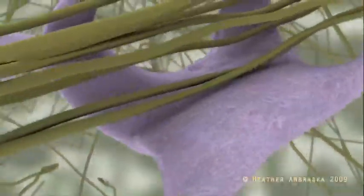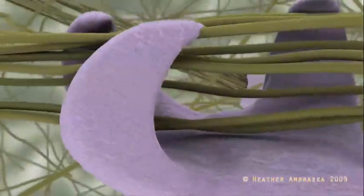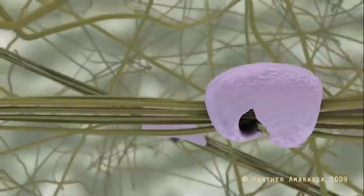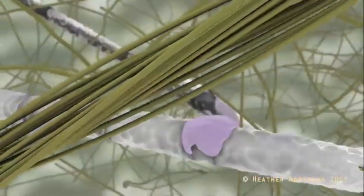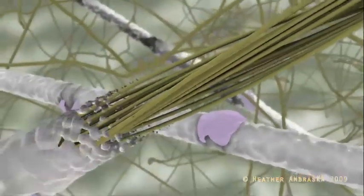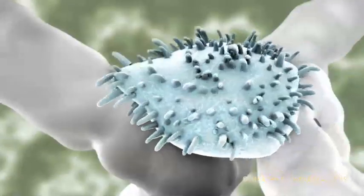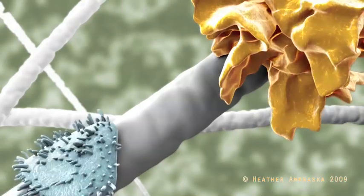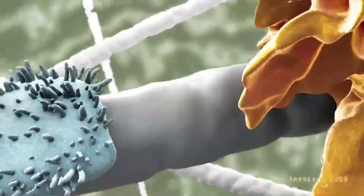During development, collagen fibers become encased by fibroblastic reticular cells that secrete extracellular matrix proteins to create an intricate conduit system. The conduit system increases the chances that a T-cell and an antigen-presenting dendritic cell will meet up while traveling the same path.